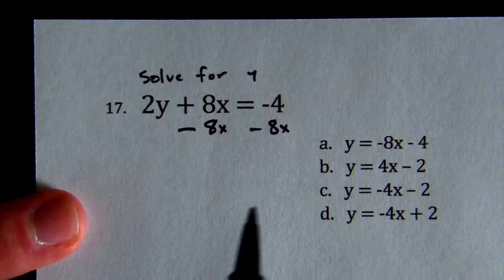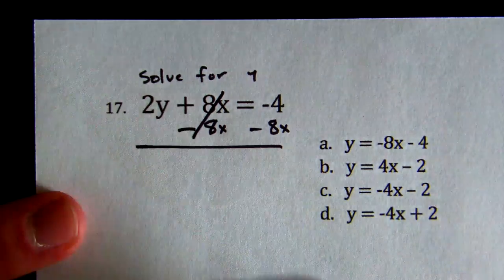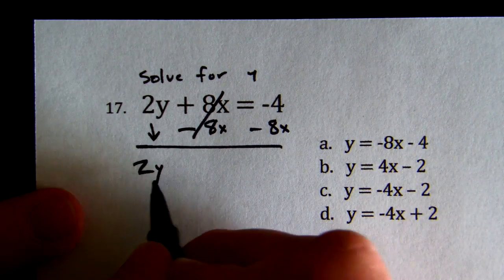We cannot subtract negative 4 minus 8x because they are not like terms. We're going to cancel out 8x minus 8x is 0, and drop down the 2y because we didn't touch it.